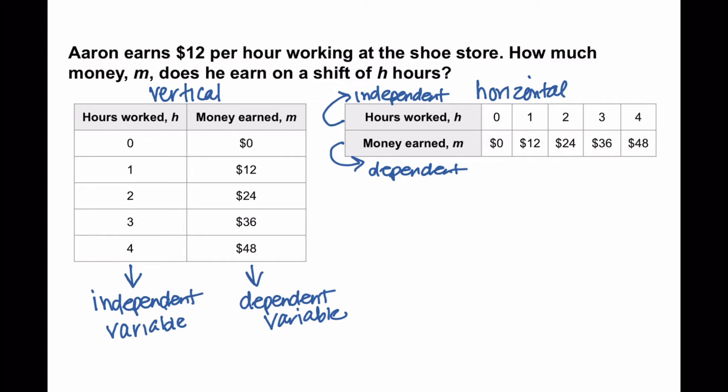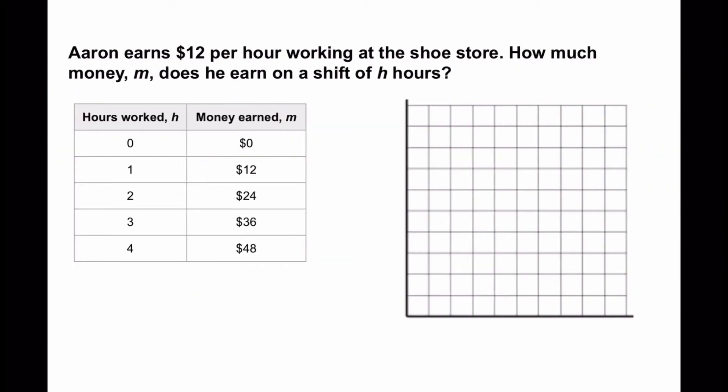So now let's do this question one more time, but this time let's represent this situation in a graph. So we have our table and our table consists of five ordered pairs. Now again, the first column is your independent variable, which is going to go on your x-axis, and your dependent variable will go on the y-axis.